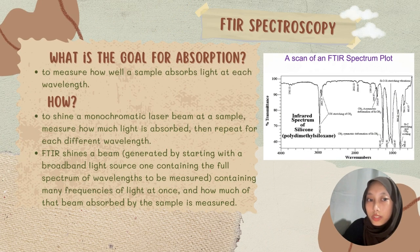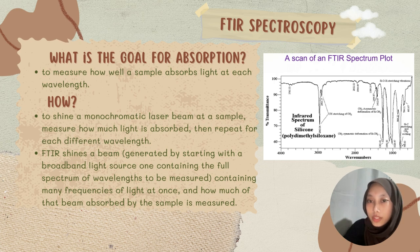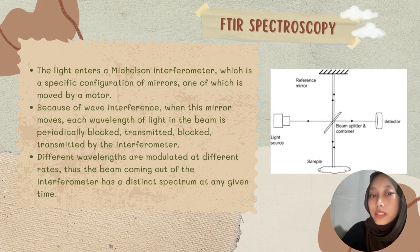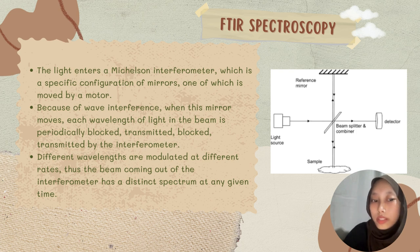The goal of absorption is to measure how well a sample absorbs light at each wavelength. FTIR shines a beam generated from a broadband light source — one containing the full spectrum of wavelengths — containing many frequencies of light at once, and measures how much of that beam is absorbed by the sample. The light enters a Michelson interferometer, a specific configuration of mirrors, one of which is moved by a motor. Because of wave interference when this mirror moves, each wavelength of light in the beam is periodically blocked and transmitted by the interferometer.